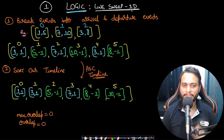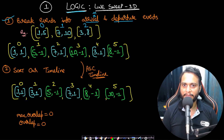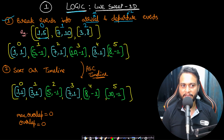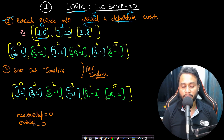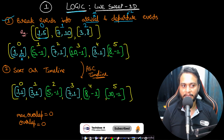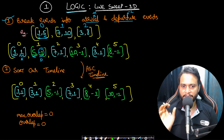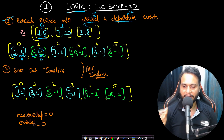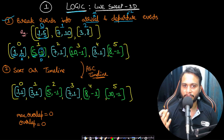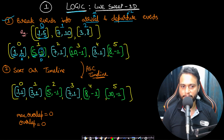I will use the line sweep 1D technique. The idea is to break each interval into two events: arrival marked as +1 and departure marked as -1. For example, interval [1,5] breaks into event (1, +1) — arrival at time 1 — and event (5, -1) — departure at time 5. I do not store the index because I only care about the count of overlaps at any point, not which specific interval it is.